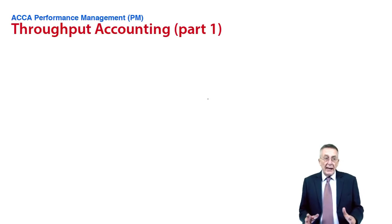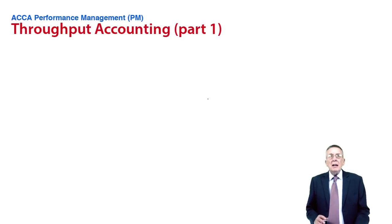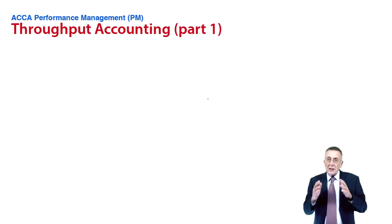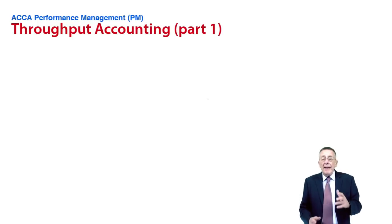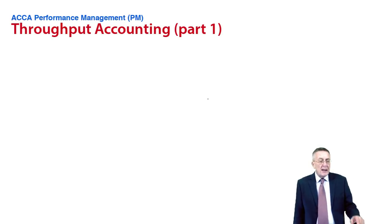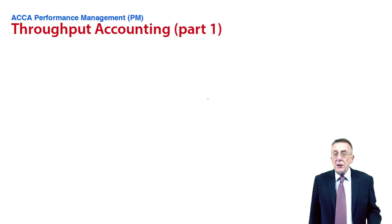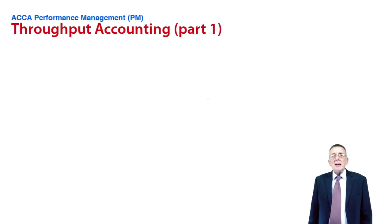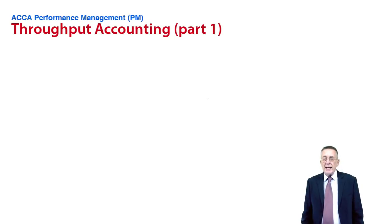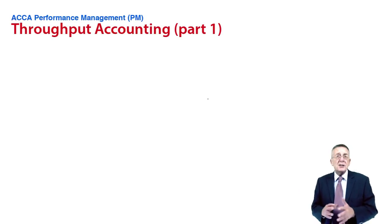This lecture is on chapter five, called throughput accounting, and what it relates to is when we're making several products but where we've got limited resources available and how to decide how best to use them. Although it's called throughput accounting, I'm actually going to do two exercises. The first exercise I'll do is the traditional or old-fashioned way of dealing with the problem, something called key factor analysis, but then I'll explain the more modern way of doing things slightly differently.